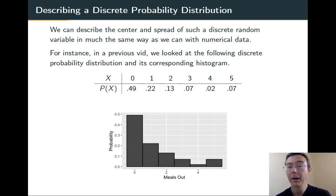Basically, we can describe the center and spread of a random variable much in the same way as we do with numerical data. For example, here's a discrete probability distribution. It corresponds to a situation where we've called up a bunch of people at random and asked them how many dinners they ate out in the previous week. About 49% of the respondents said they had not eaten out in the past week. About 22% said they'd eaten out once. I've also drawn the probability histogram.